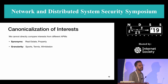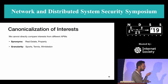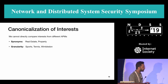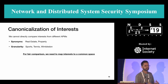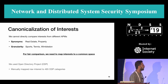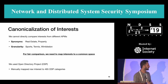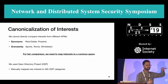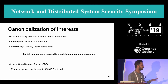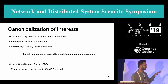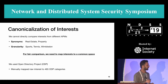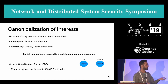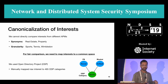The other problem is granularity. One APM could be inferring very generic information such as 'sports,' whereas another could drill down to something very specific such as the tennis tournament Wimbledon. So for fair comparison, we need to map these interests to a common space. To that end, we use the Open Directory Project, which provides a hierarchy of interests. We manually mapped all raw interests to 465 categories provided by ODP. For example, if Facebook inferred 'soccer' and BlueKai inferred 'softball,' we map both to the ODP category 'sports.'